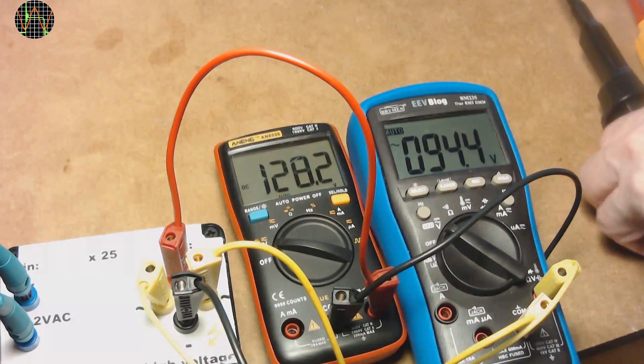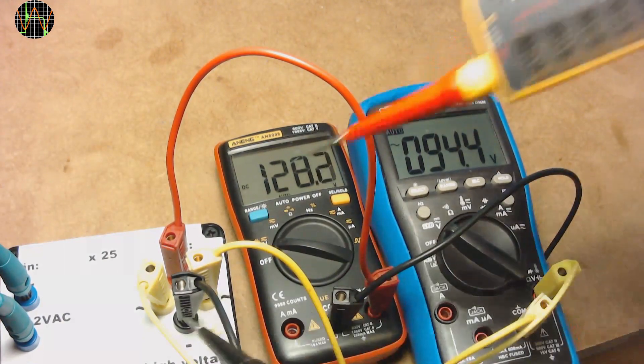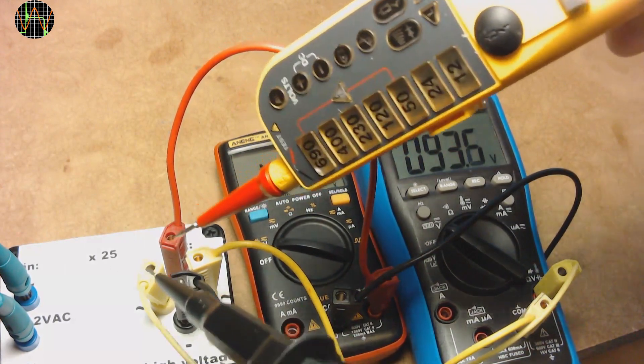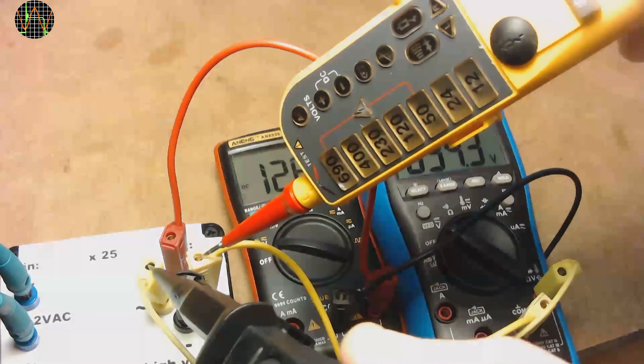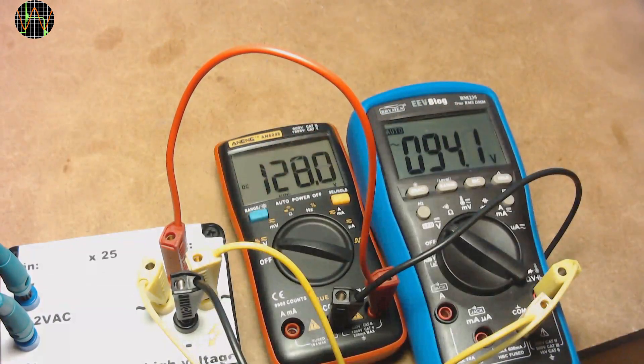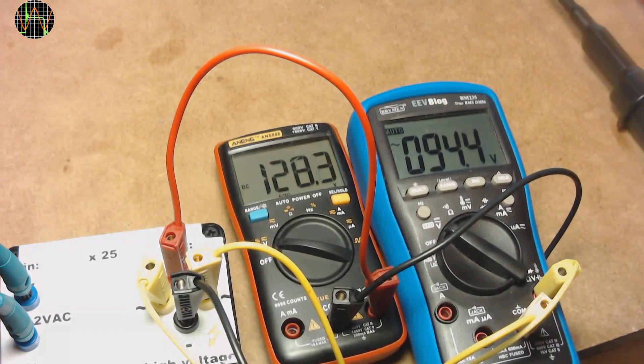At 128 volts DC, all voltage lights up to 120 volts show and the DC indicator is also lit. For 94 volts AC, it kind of rounds up to be on the safe side and also shows the 120 volts indicator as well.